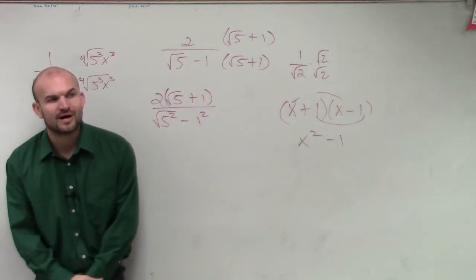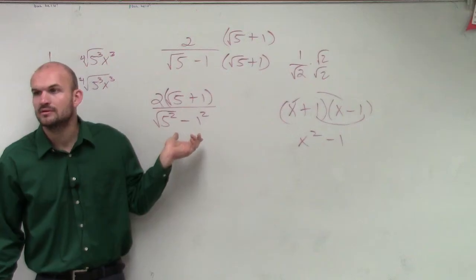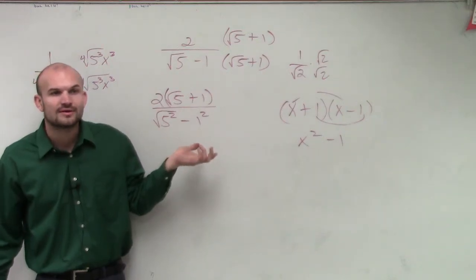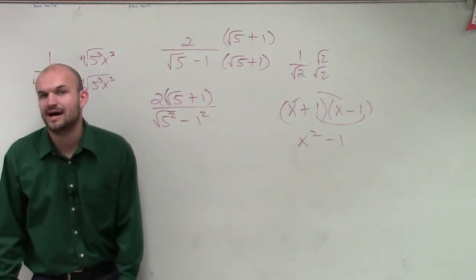So what's cool about this, ladies and gentlemen, is now on our denominator, we just get rid of our square root. Yeah, we don't have a square root anymore. So when you have a binomial, to get rid of the square root, you have to multiply by the conjugate.